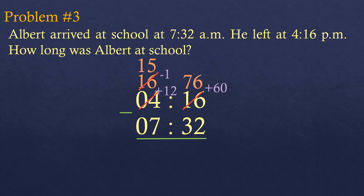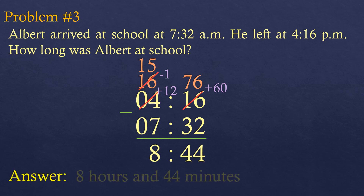Let's subtract: 76 minus 32 is 44, and 15 minus 7 is 8. The question asks how long Albert was at school — it's asking for duration, not time. So the answer is not 8:44 in the evening but 8 hours and 44 minutes.